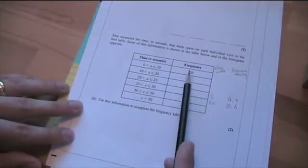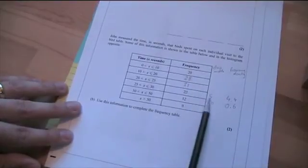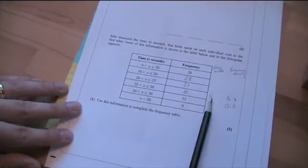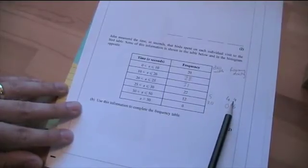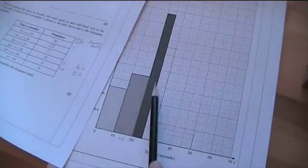So, just to recap. To get information from this grouped frequency table to the histogram, work out the class width. Then, do the frequency divided by the class width, and that gives you your frequency density. Frequency density is the height of the bar on the histogram.